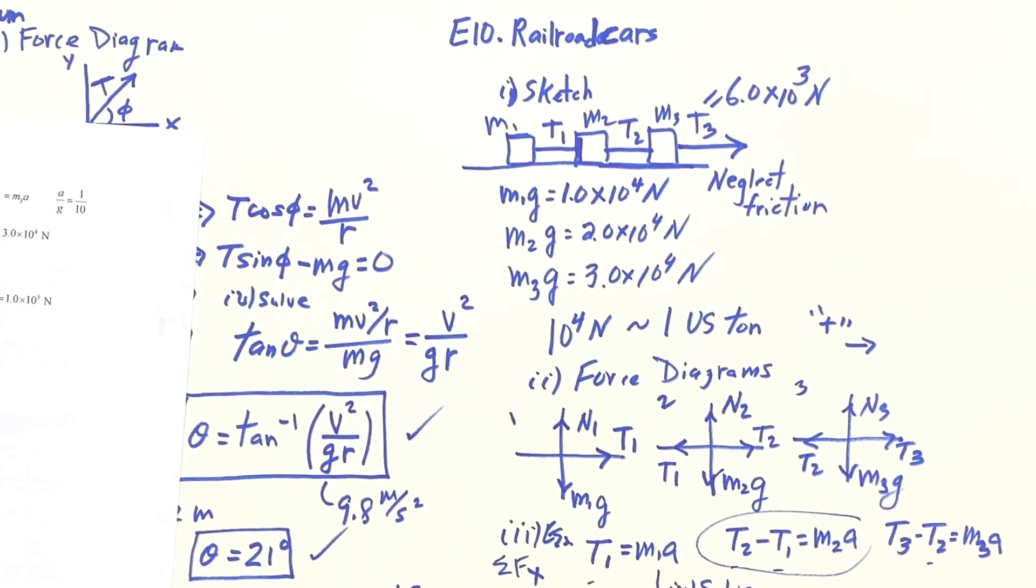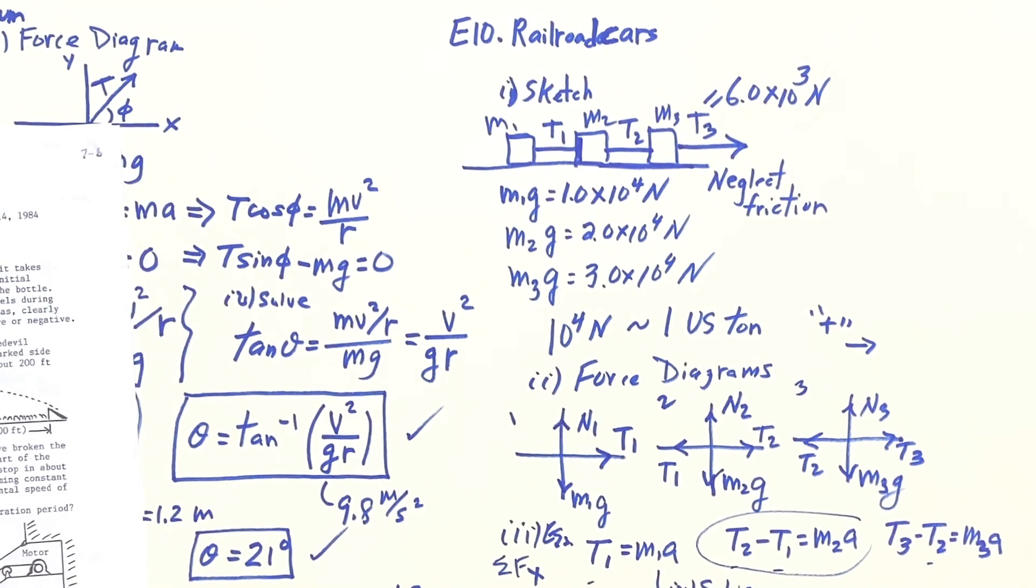And the third tension they gave me, that's the one that's pulling from the far right. Nice problem. That concludes our set of 10 examples.